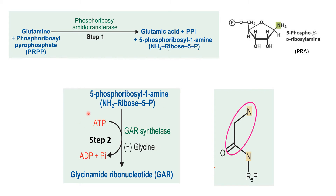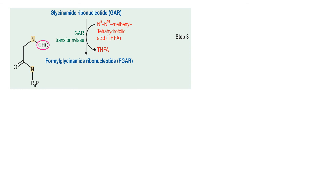The product of the first reaction is phosphoribosylamine, abbreviated as PRA. In the second step, PRA condenses with glycine in the presence of ATP to form GAR — glycinamide ribonucleotide. In this reaction, glycine donates atoms that will become C4, C5, and N7 of the purine ring. Next, N5,N10-methenyl tetrahydrofolate (some books give this as N10-formyl tetrahydrofolate) donates the formyl group.